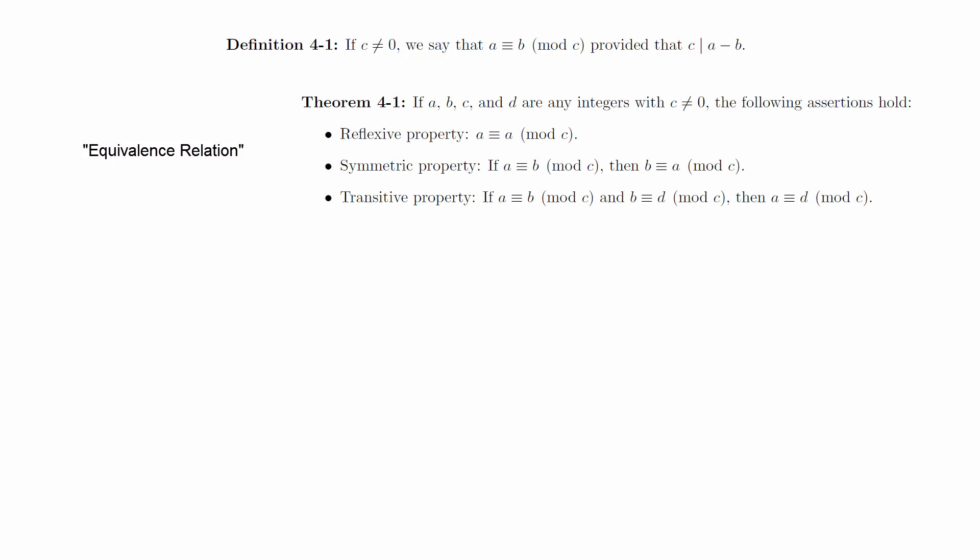If a, b, c, and d are integers with c not equal 0, then the following assertions hold. The reflexive property: a is congruent to a modulo c. The symmetric property: if a is congruent to b mod c, then b is congruent to a mod c. The transitive property: if a is congruent to b mod c, and b is congruent to d mod c, then a is congruent to d mod c.